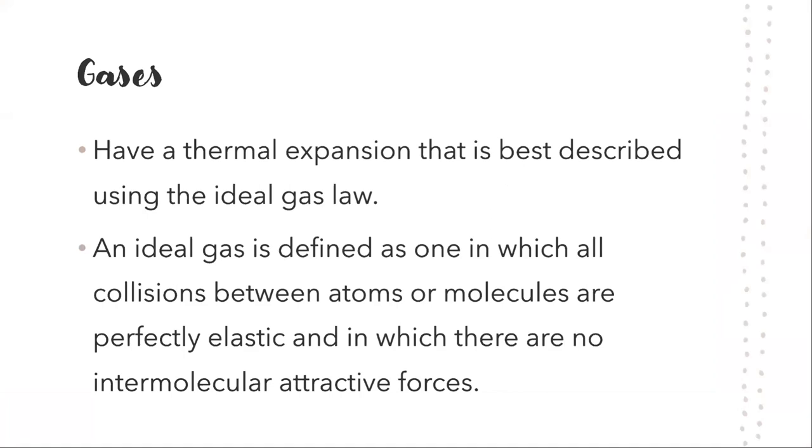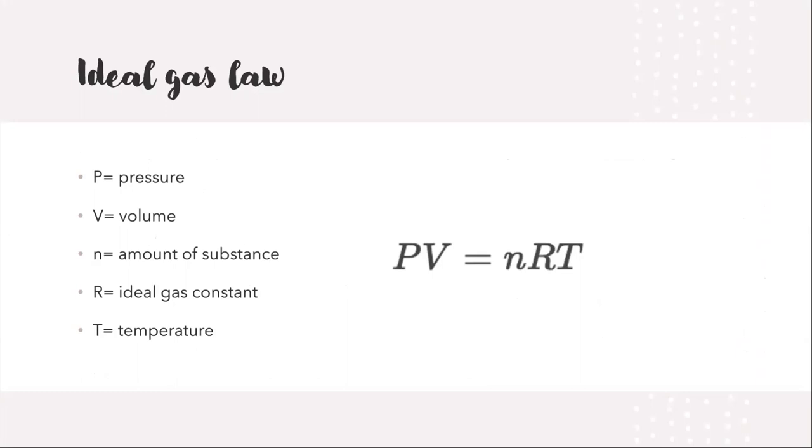Gases have a thermal expansion that is best described by using the ideal gas law, which would be explained in the next slide. And the molecules and gases are further apart and they are weakly attracted to each other. And when you add more heat, heat causes... And an ideal gas is defined as one in which all collisions between atoms or molecules are perfectly elastic and in which there are no intermolecular attractive forces. So the ideal gas law here shows you the formula PV equals nRT, in which P means pressure, V means... It's for temperature.